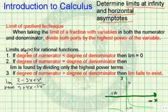Also, when we're taking limits as they approach positive or negative infinity for rational functions: If the degree of the numerator is less than the degree of the denominator, the limit is going to equal zero. If the degree of the numerator is equal to the degree of the denominator, then the limit is found by dividing only the highest powers terms. And finally, if the degree of the numerator is greater than the degree of the denominator, then the limit fails to exist.